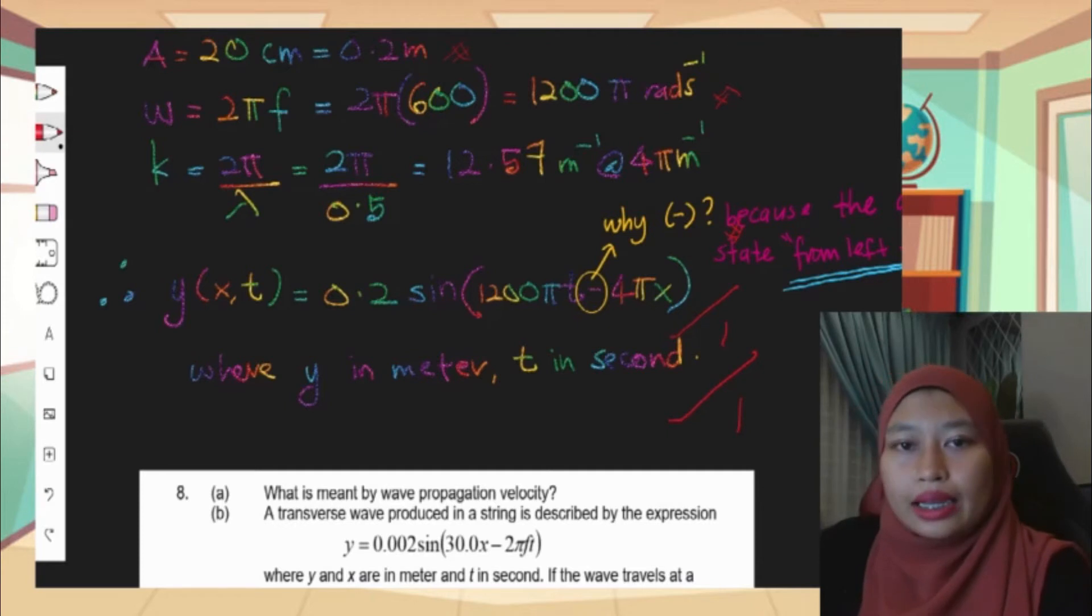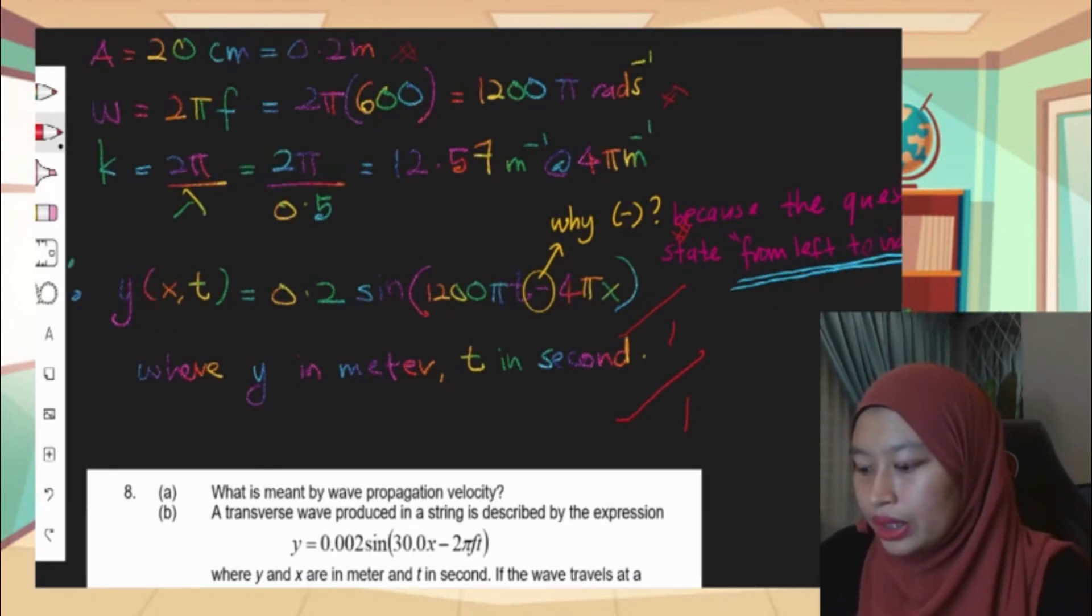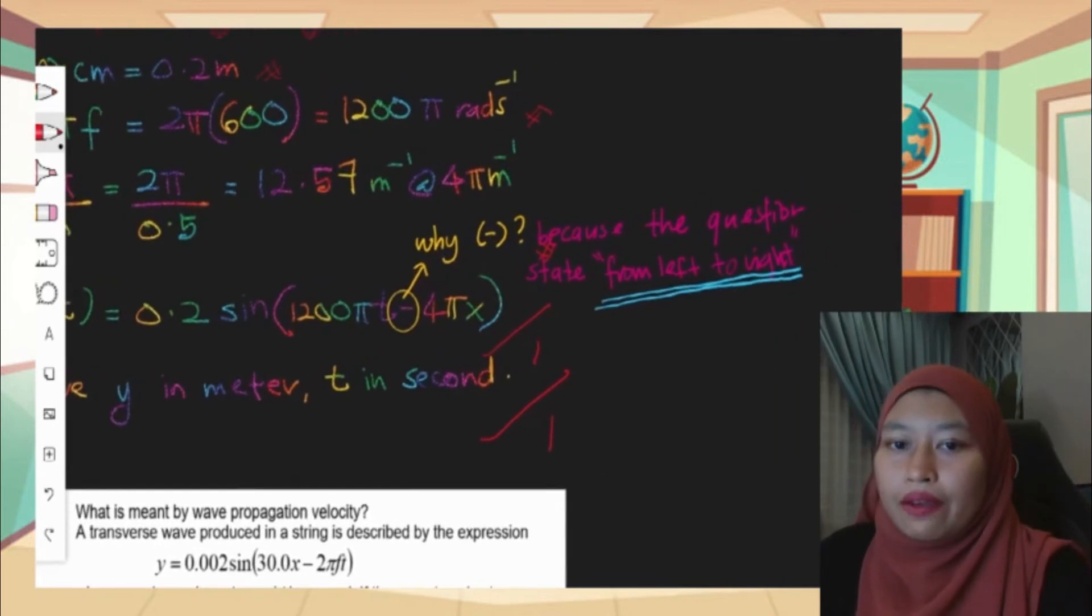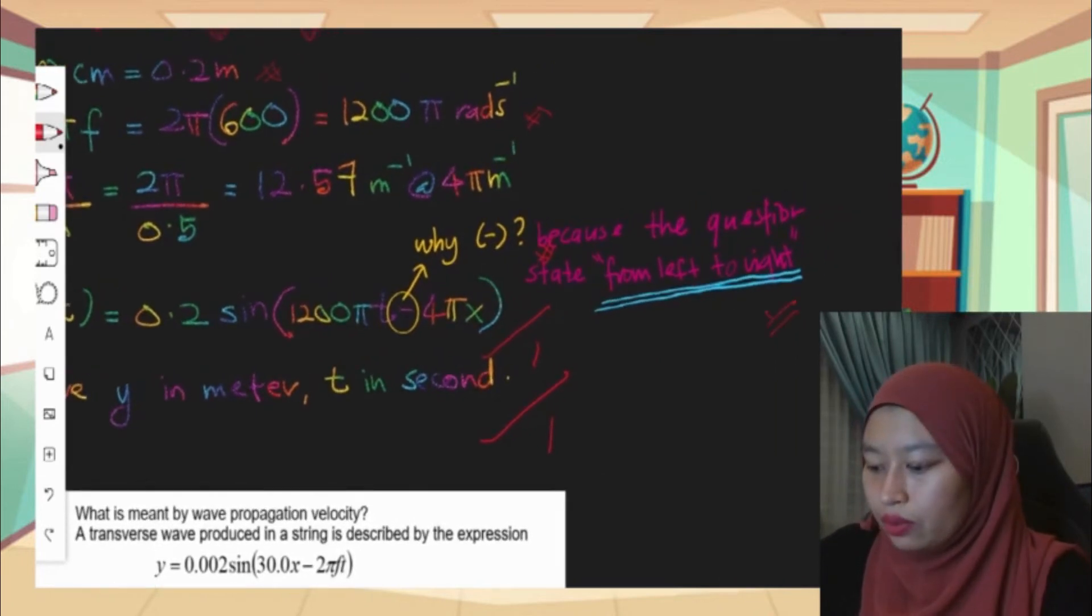Our final answer will be y equals 0.2 sine 1200 pi t minus 4 pi x. And don't forget, the other marks for you here is when you write where y in meter and t in second. So there is 2 marks for the final answer. Again I emphasize here why I put minus, because the question states that from left to right, so that is why I know it will become minus kx.